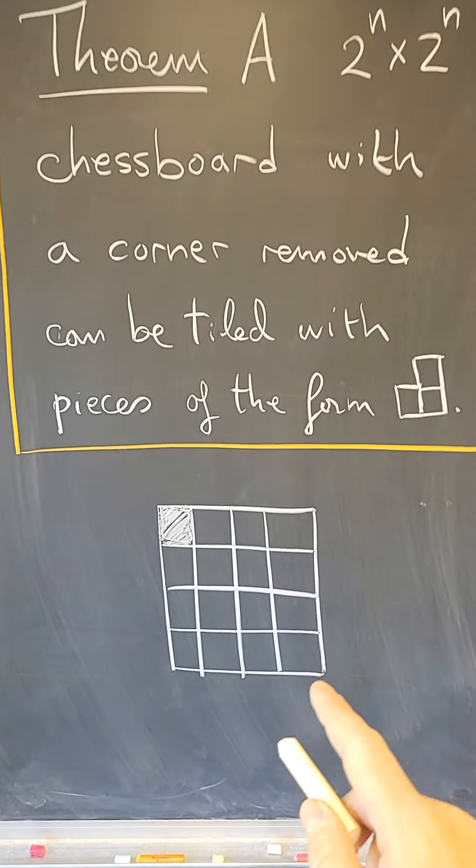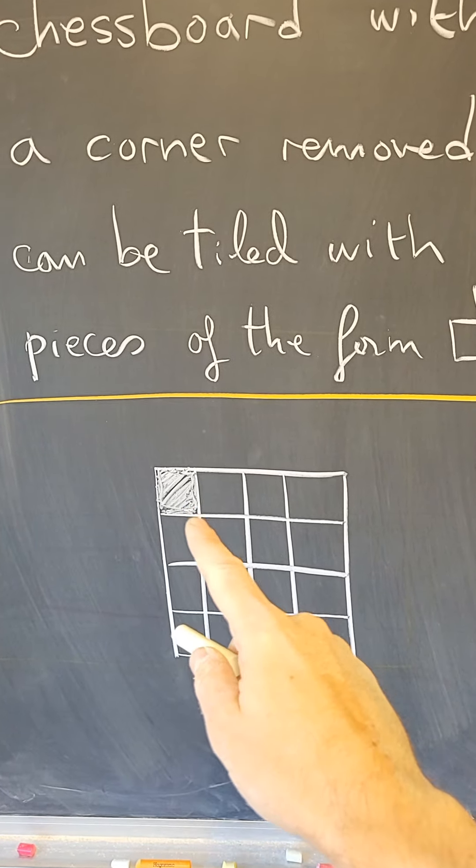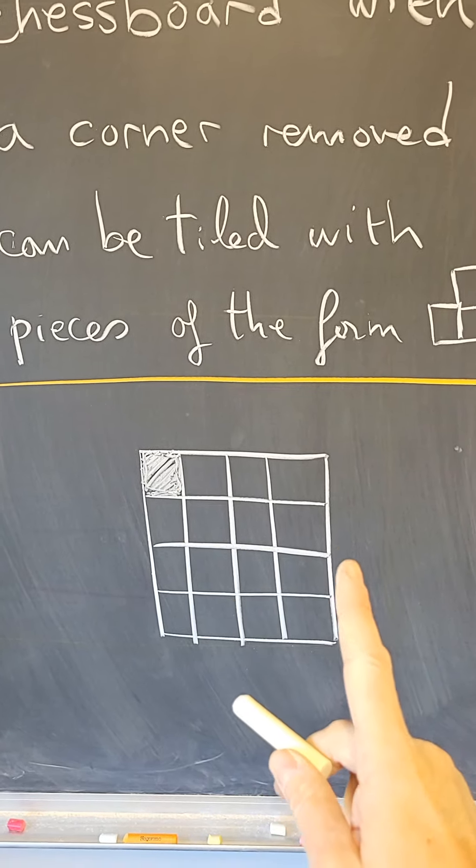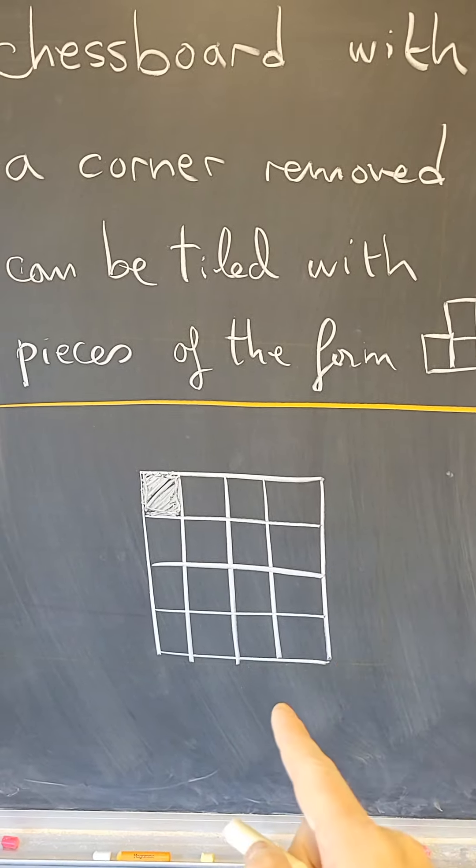So let me give you one example. This is one chessboard that is four by four, one corner removed. Stop the video here and try to find a tiling using those pieces. And then I will give the solution.